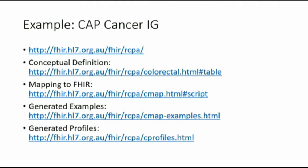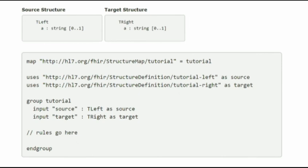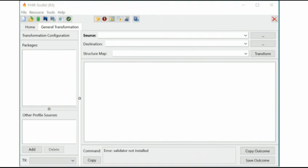Any questions? One question: can you pop up the validation tool — if you have StructureMap resources, including the script — and enter a mapping transform there? You can put a StructureMap in there but it's easier to use the script by URL. That's a good idea — I should add the ability to enter a mapping transform directly. Any other questions?